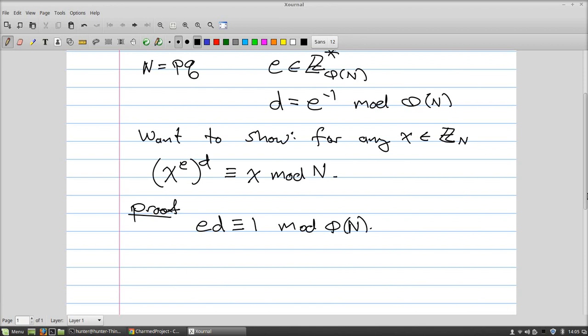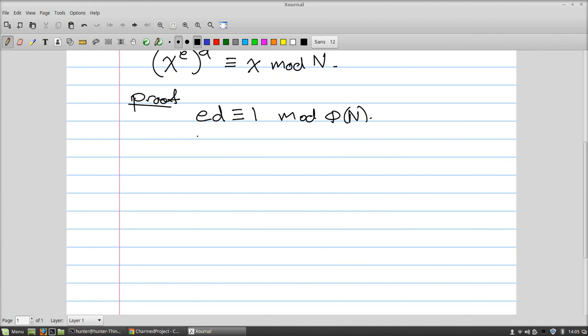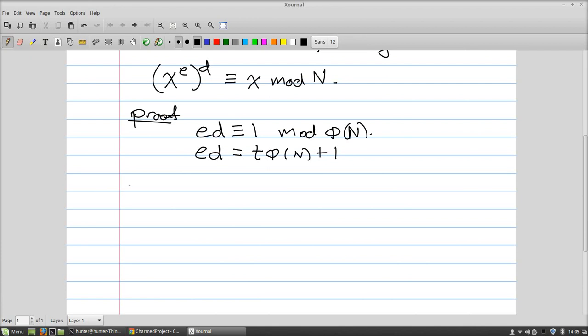That's because they're defined to be inverses to each other, and so that gives you an actual equality: e times d equals some number t times φ(N) plus a remainder of one. So x to the e to the d is the same thing as x to the ed, which equals x to the tφ(N) plus one, which equals x times x to the tφ(N).